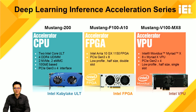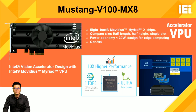Here is the IEI Mustang acceleration card series, including CPU, FPGA, and VPU options. VPU refers to the Mustang V100MX8. They are all based on the OpenVINO toolkit to implement deep learning inference applications. The Mustang V100MX8 is a very compact PCIe card — half-length, single-slot — with extremely low power consumption of 31W. The 8 Intel Movidius Myriad X VPU chips inside provide powerful computation capability.